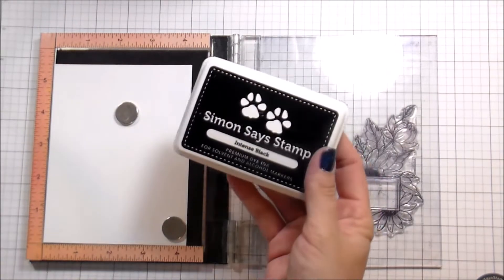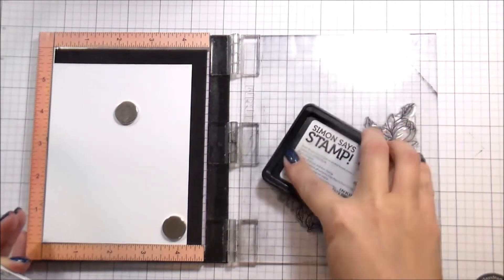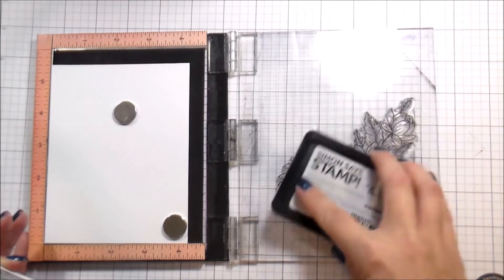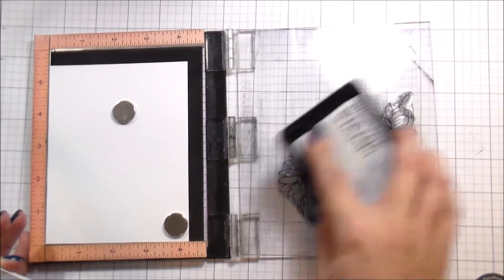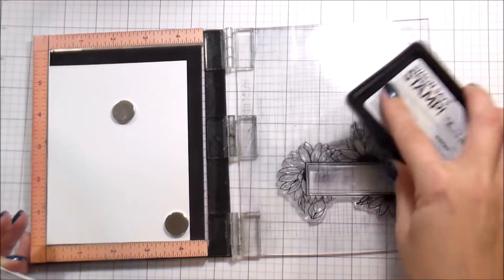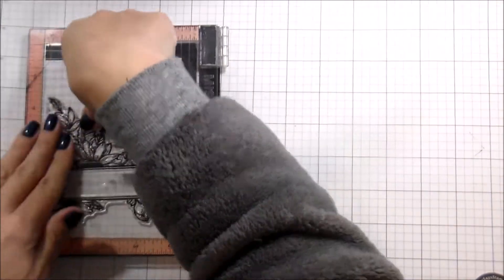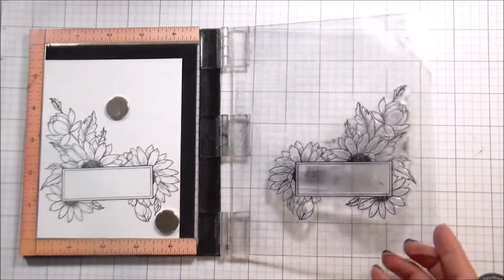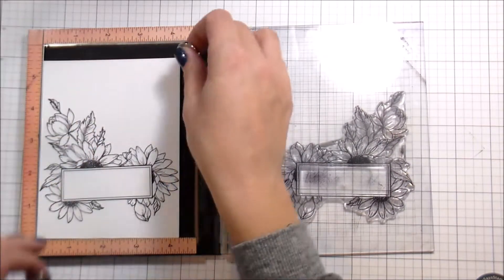I'm working on Neenah 80 pound solar white cardstock. I'm going to stamp out my image. As you can see, it's already stained because Peanut got to it before I did. He made me a card with it and I was very happy about that. I'm using Copic Safe Ink because I'm going to be coloring with my Copic markers.